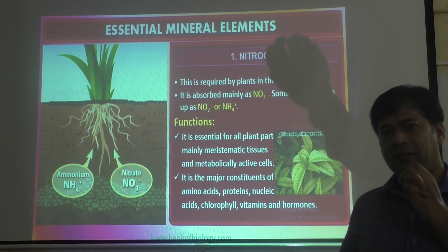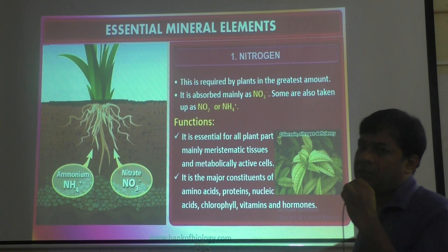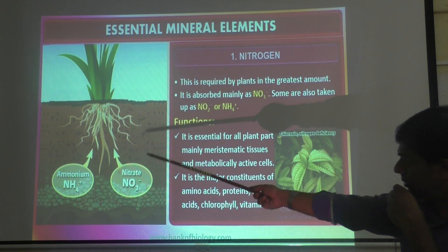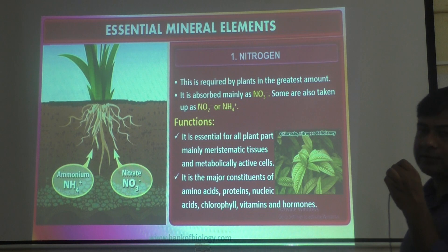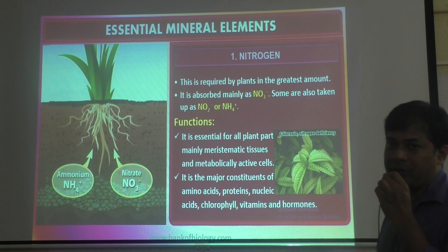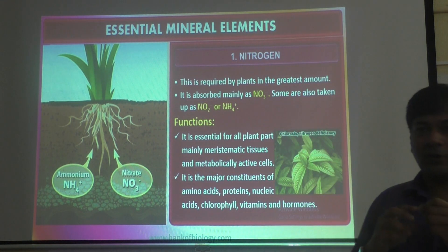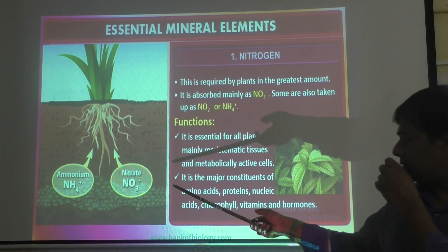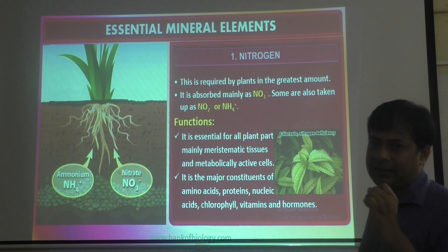Now we will discuss what function every single mineral does in the plant, one by one. First we start with nitrogen, because it is the most abundant element present in the atmosphere in very large quantity. In the soil, nitrogen is present in two forms: nitrate (NO₃⁻) and ammonium ions (NH₄⁺). The plant absorbs nitrogen from the soil in the form of either ammonium ions or nitrate.